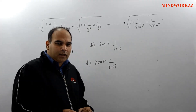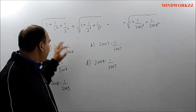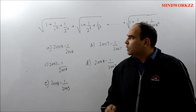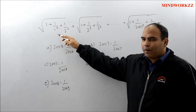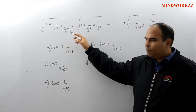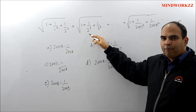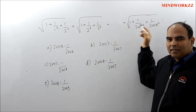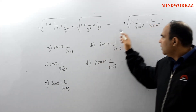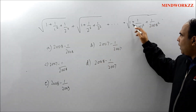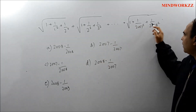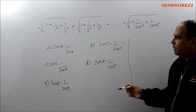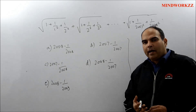The question asks us to find the sum of this expression: √(1 + 1/1² + 1/2²) + √(1 + 1/2² + 1/3²) and these terms continue all the way up to √(1 + 1/2007² + 1/2008²). We have five options and we have to choose the correct answer.